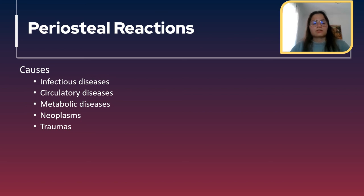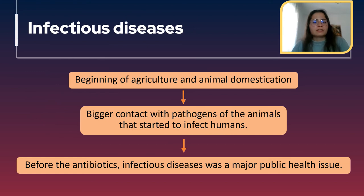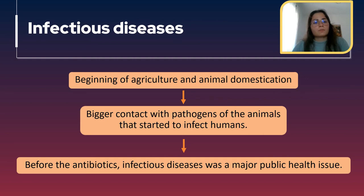Now we will move on to infectious diseases. After the beginning of agriculture and the domestication of animals, there was an increase in the infectious diseases that affected humans, because of the greater contact with pathogens from animals that started infecting humans. Before antibiotics, infectious diseases were a really big problem in societies. We are well aware of the great pandemics that caused millions of deaths, for example the Black Plague.